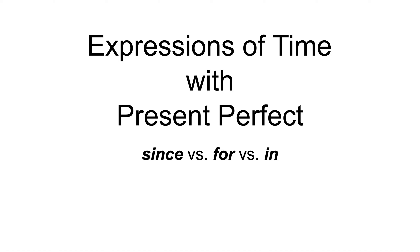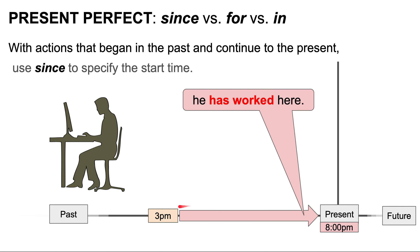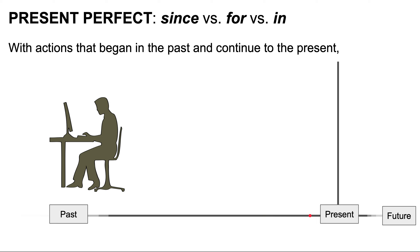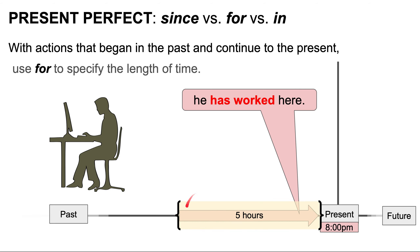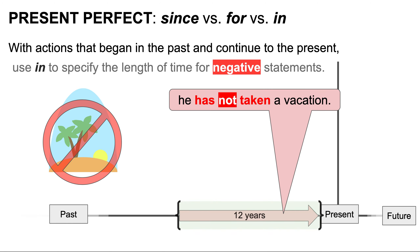Now let's look at since, for, and in. With actions that began in the past and continue to the present, use since to specify the start time. For example, since 3 p.m. he has worked here — it's now 8 p.m. Use for to specify the length of time. For example, for five hours he has worked here. Use in to specify the length of time for negative statements. For example, in 12 years he has not taken a vacation.